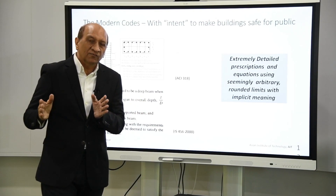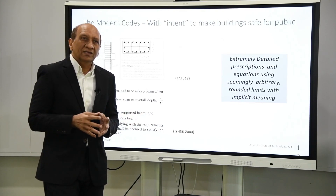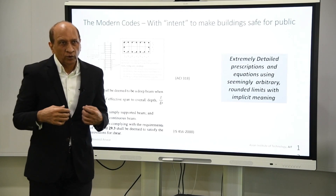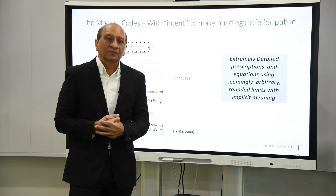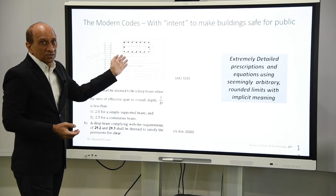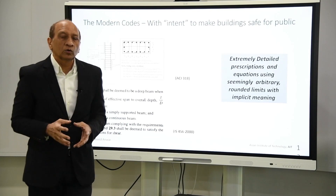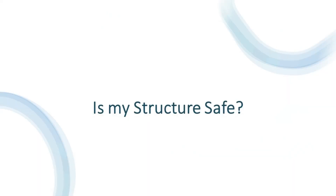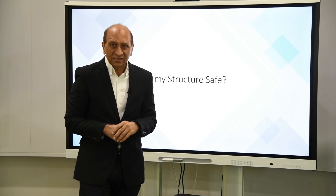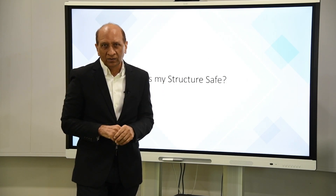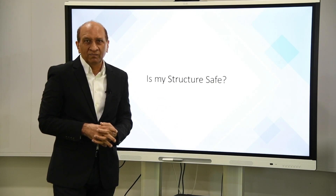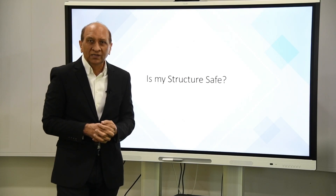Different engineers may interpret code clauses slightly differently — rounding up or down based on their own experience. Take confinement rules for ties in a column: should we follow them everywhere? Is every column going to experience the same level of vulnerability or rotation? We don't know, but we follow the rules everywhere because that's what the code says. And what if an existing building is missing two stirrups in a beam? Does that automatically make the whole structure unsafe because it didn't follow the code?